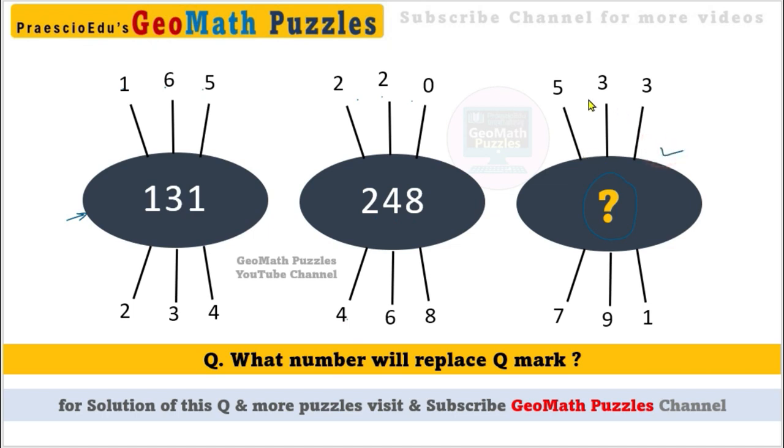At the question mark at the center, above the question mark is 5-3-3 and at the bottom of the question mark is 7-9-1. So at the question mark, what number will become? There's some relation - many persons have found out a relation.